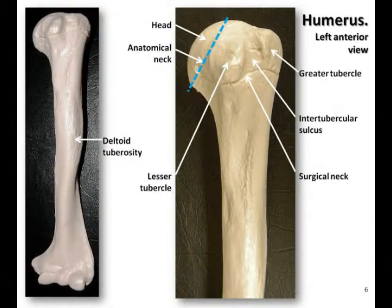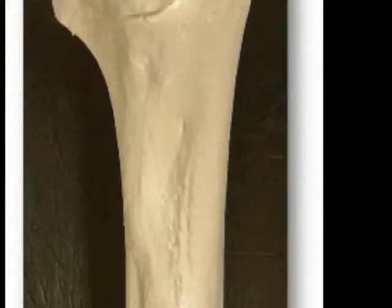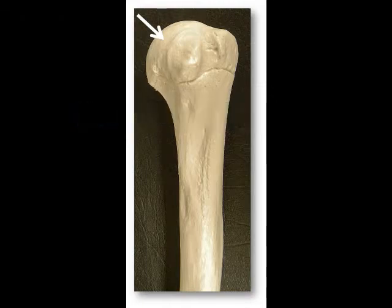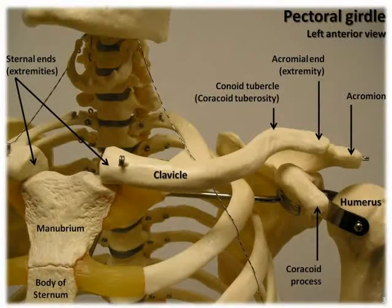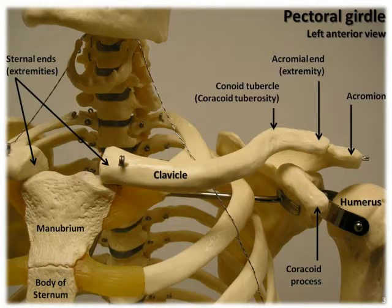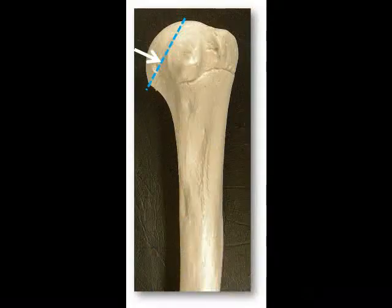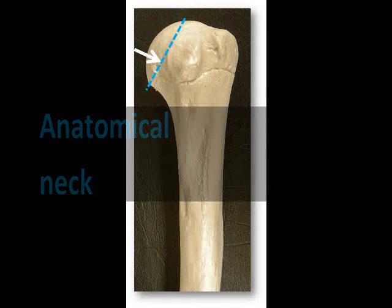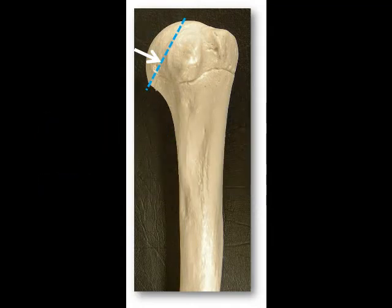Let's take a look at the bony landmarks at the proximal end of the humerus. This is the head, the rounded portion that articulates with the glenoid cavity of the scapula to form the shoulder joint, also known as the glenohumeral joint. A great way to identify the left humerus from the right humerus is the orientation of the head — it always points medially towards the scapula. The oblique groove just distal to the head is the anatomical neck, which is the remnant of the epiphyseal growth plate that was once active in the growing bone.